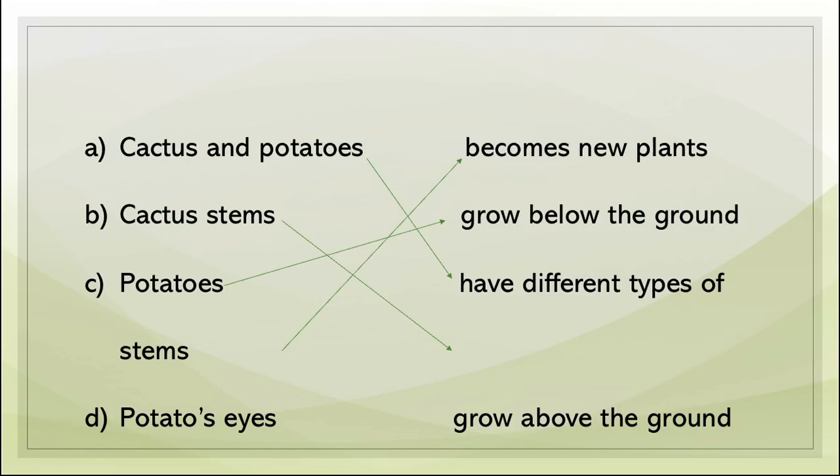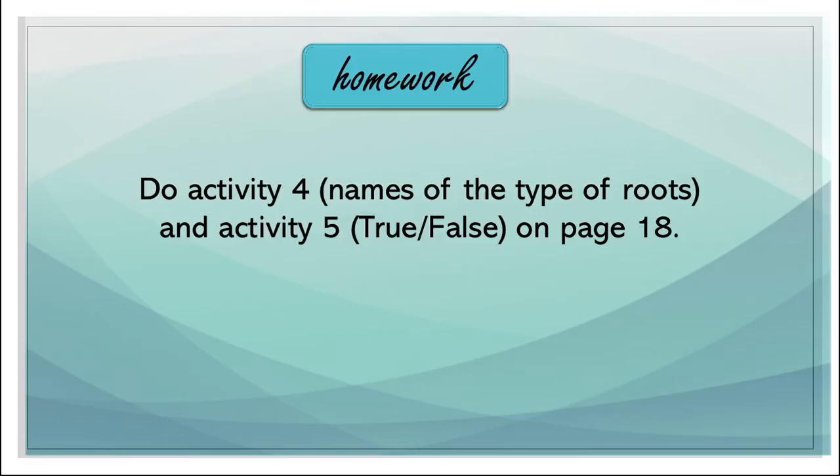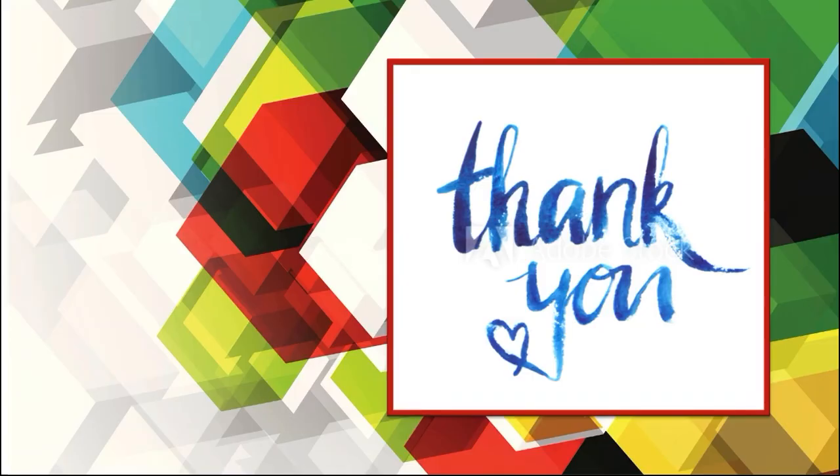Now for the Match the Column activity: cactus and potatoes have different types of stems. Cactus stems grow above the ground, potatoes grow below the ground, and potato eyes become new plants. You have to match these columns in your book. For homework, do Activity Number 4 — names of the types of roots — and Activity Number 5 — True and False — on page 18. These activities are easy; just write the two types of roots in the blanks and fill in the true or false answers.